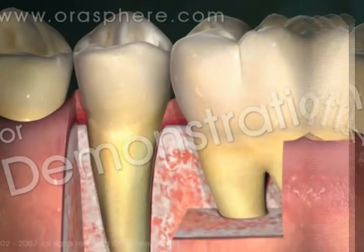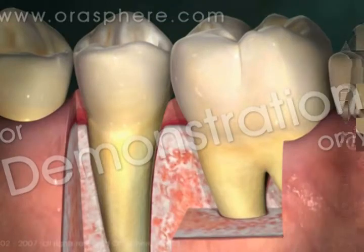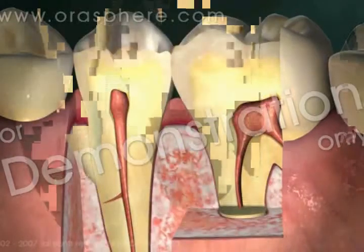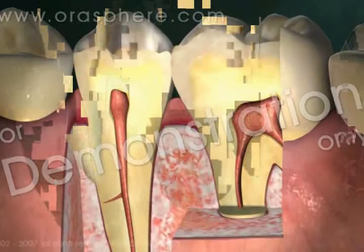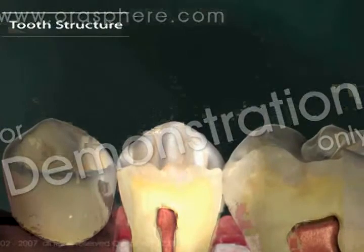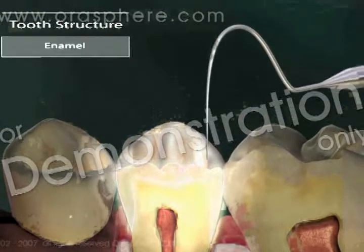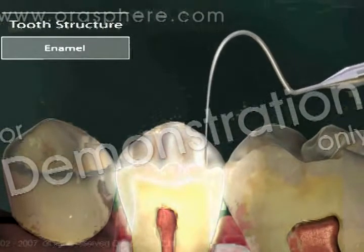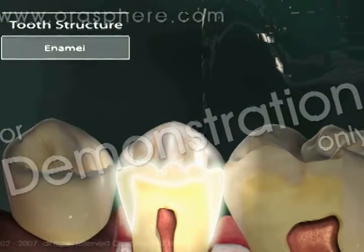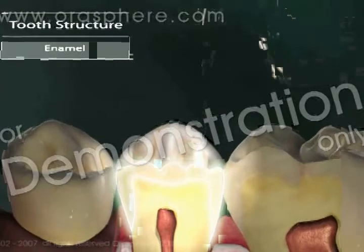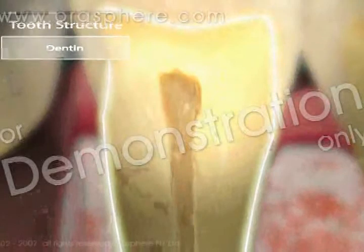If we expose the roots of teeth, then slice these in half, this is what they might look like. The outside of the tooth, above the gum, is covered with a hard, biting layer, the enamel. Beneath the enamel, forming the core and root of the tooth, is another hard, calcified material called dentine.